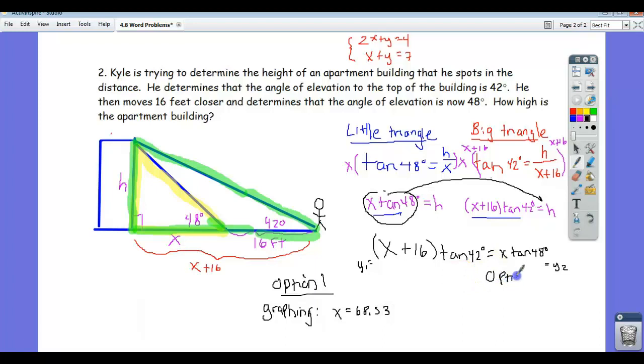Option two, we won't do because this is taking too long, I don't want to take up too much time on this video. But option two would be to use algebra. And I'm going to leave that to you. If you want to focus on the algebra, you can work out the algebra here. It's not bad. Remember, tangent of 42 is a number. And so is tan of 48. So this is no different than like x plus 16 times 4 equals x times 5. It's no different. So maybe put tan 42 and tan 48 in the calculator as decimals and then finish solving for x. You all have the ability to do that.